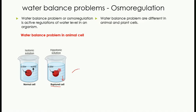When water moves inside the cell, the cell starts putting pressure on the cell membrane. As the pressure on the cell membrane keeps increasing, there comes a point when it cannot bear that pressure anymore, so the cell membrane will burst and all the cell contents will go outside.